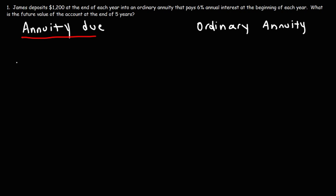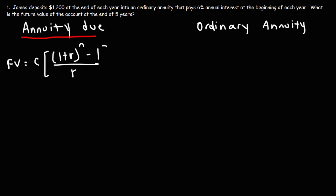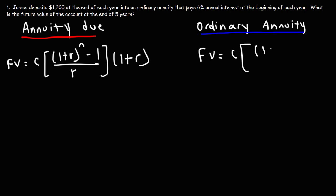In an annuity due, the future value is going to be the amount that you deposit — typically on an annual basis — times (1 + r) raised to the n, where n is the number of time periods, minus 1, divided by r, times (1 + r). To calculate the future value of an ordinary annuity, the formula is very similar, but the only difference is you don't have the (1 + r) on the right side.